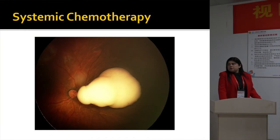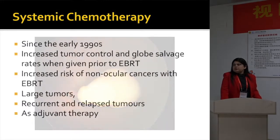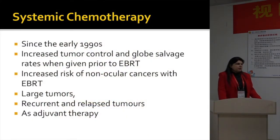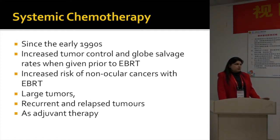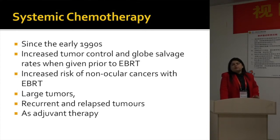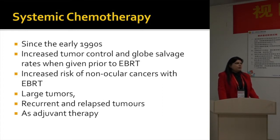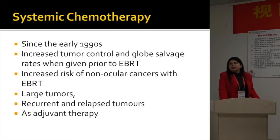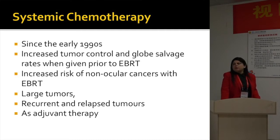When do we use systemic chemotherapy? How do we use it, and which systemic chemotherapy to use? Systemic chemotherapy has stood the test of time since the early 1990s, when its role was recognized in providing increased tumor control and lower salvage rates when given prior to external beam radiotherapy, which was the mainstay of treatment for retinoblastoma. There was also recognition that EBRT increases risk of non-ocular cancers, which is another reason systemic chemotherapy became more popular.